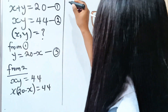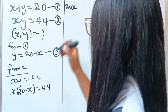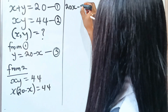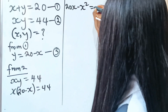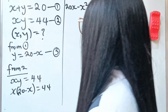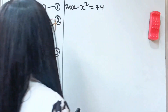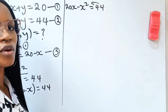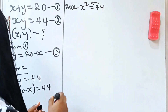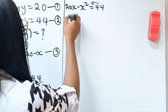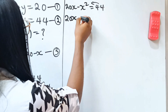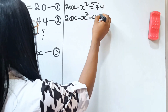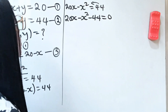Let's open the brackets. x times 20 minus x squared is equal to 44. Now let's transfer everything to the other side of the equation. We have 20x minus x squared minus 44 is equal to 0.